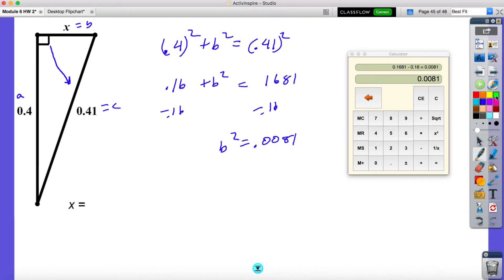And if I subtract 1.16, I'm going to get B squared is equal to 0.81. So then all I'm going to do now, excuse me, 0.81. All I'm going to do now is take the square root on both sides, and I'm going to get an answer of B equals 9 hundredths, so 0.09.